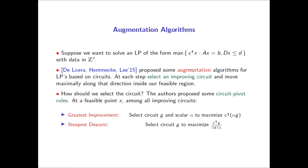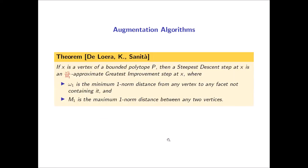The greatest improvement rule requires only a polynomial number of circuit augmentations to reach an optimal solution, although computing the greatest improvement step is NP-hard. The steepest descent rule requires a number of steps at most equal to the number of circuits of the feasible region — or more precisely, of the linear description — but this bound is exponential in general and hard to analyze. In follow-up work, we sought to make that bound more digestible.